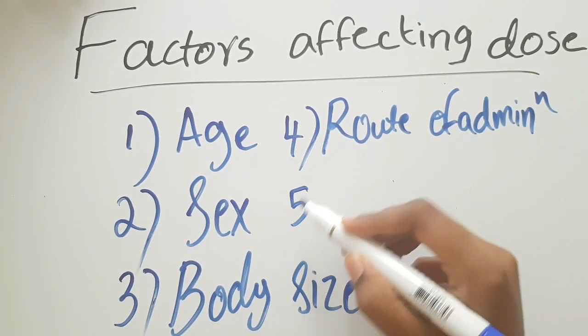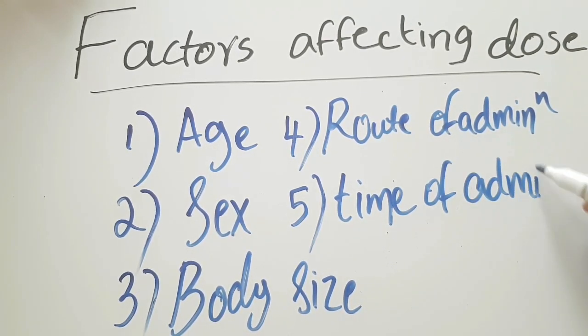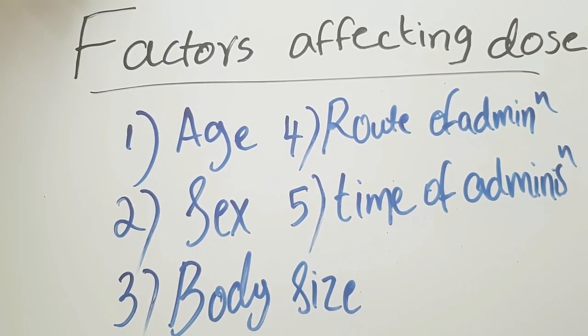Next, the fifth one: time of administration. The drugs are most quickly absorbed from empty stomach. The presence of food in the stomach delays the absorption of drug. Hence, a potent drug is given before meals. An irritant drug is given after meals, so that the drug is diluted with the food and thus produces less irritation.